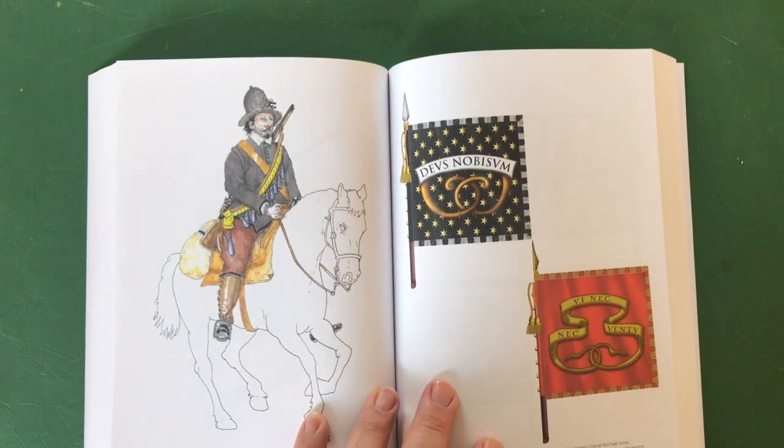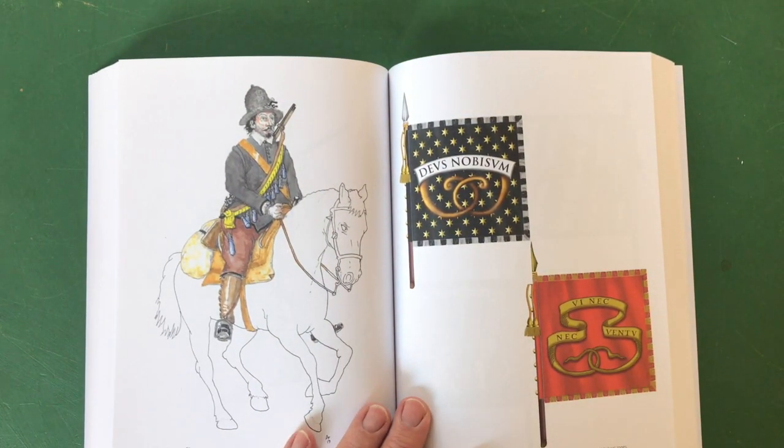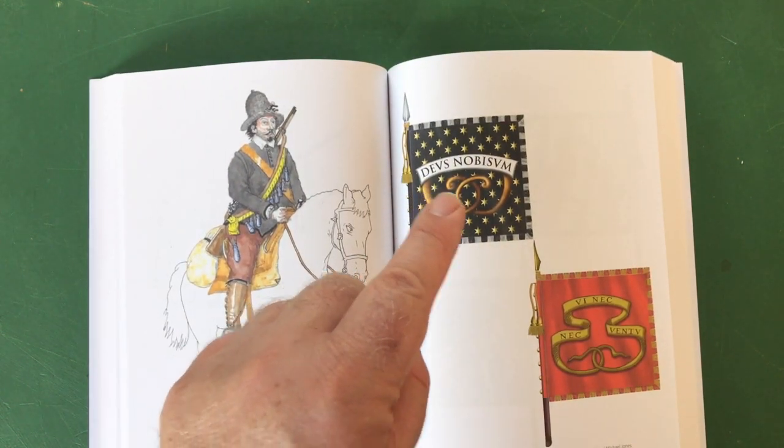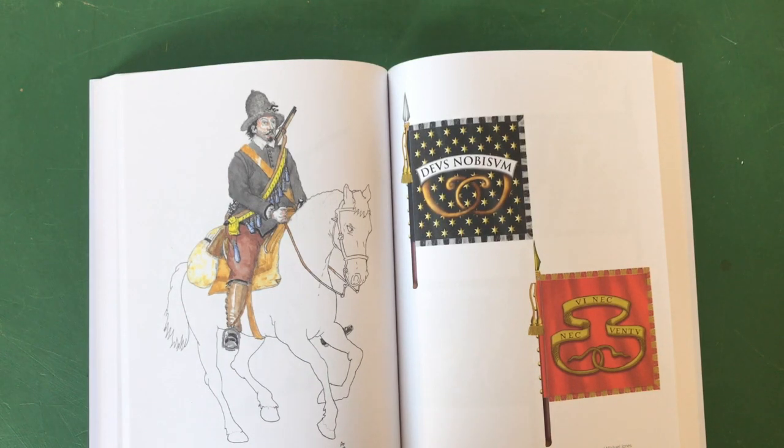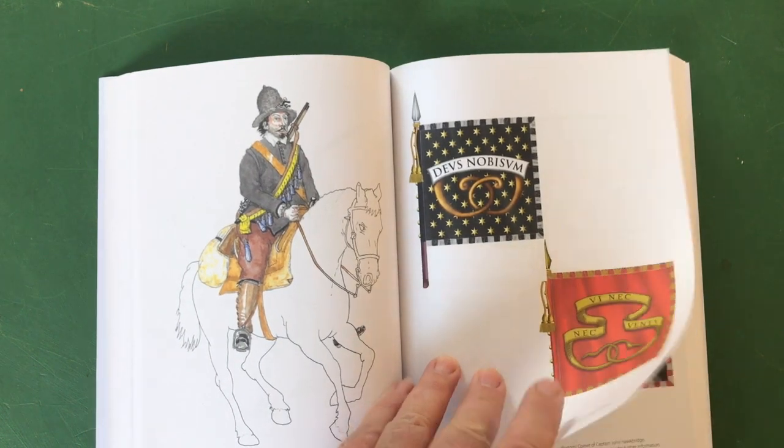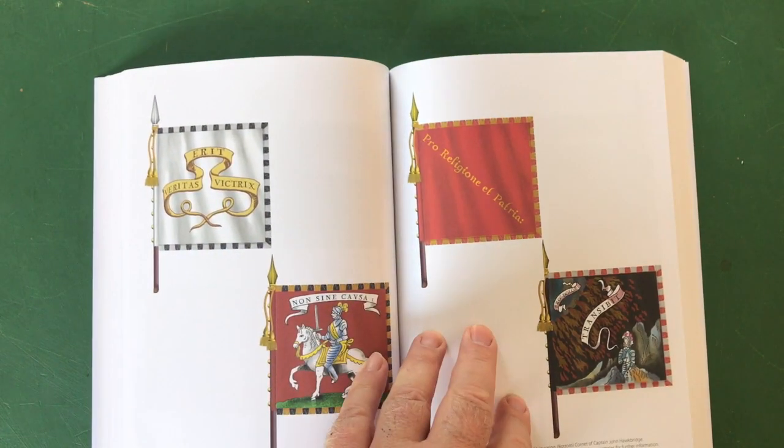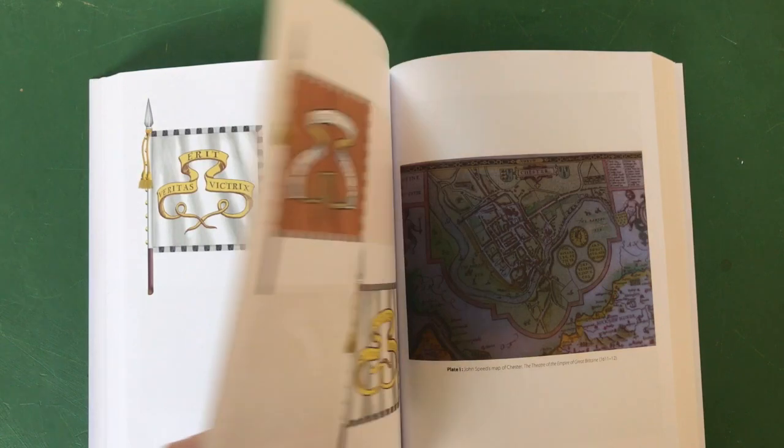There we go - the things that really as I mentioned at the start kind of turn me on about this book are actually the wonderful renditions of the standards and guidons by I think it's a Dr. Leslie Prince who's done them for this book. And they're lovely, they are really lovely. And all wargamers raising English Civil War units will find those an absolute boom.